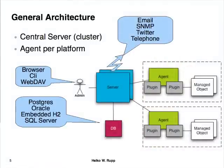On this first slide, I will show you the general architecture of RHQ. It basically is a hub-and-spoke architecture where you have a cluster of servers at the central node. On each managed platform, which is denoted by the dashed line, you have an agent running which gets all the plugins. These plugins talk to the managed objects. On the server, you have the administrator connecting via a browser — we have a rich UI that you will see later on.